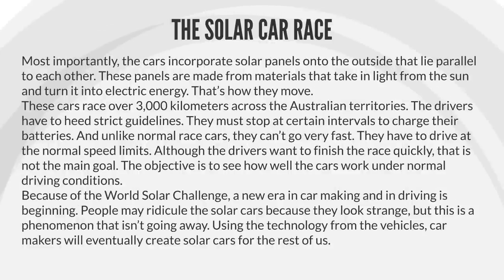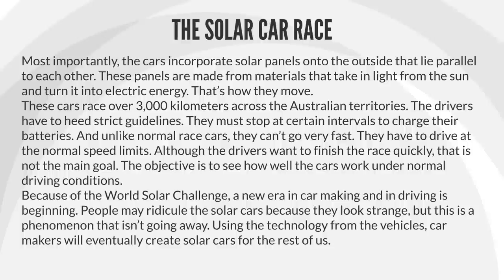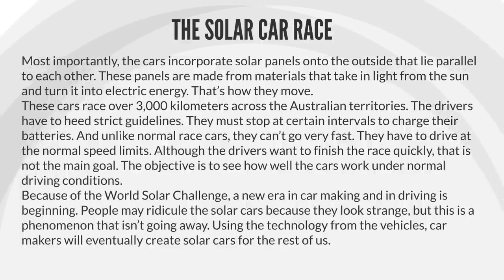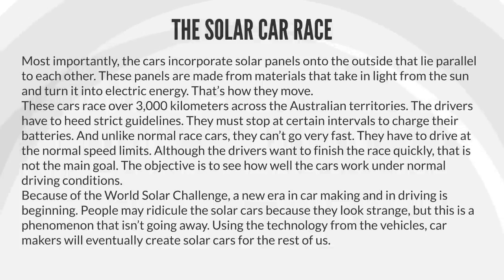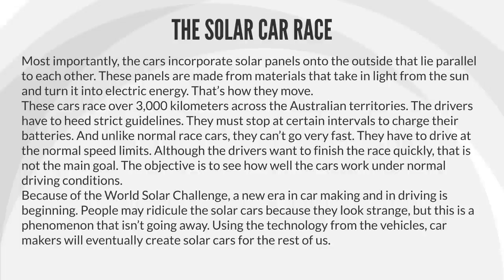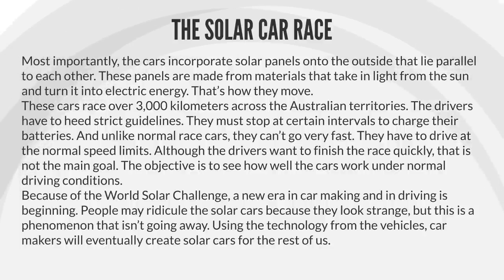These cars are shorter and much more flat than normal cars. Most importantly, the cars incorporate solar panels onto the outside that lie parallel to each other. These panels are made from materials that take in light from the sun and turn it into electric energy. That's how they move. These cars race over 3,000 kilometers across the Australian territories. The drivers have to heed strict guidelines. They must stop at certain intervals to charge their batteries.